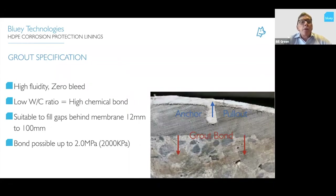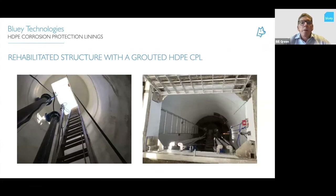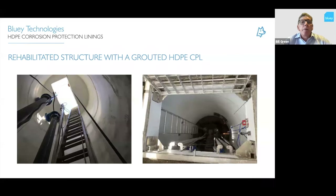Grout specifications require very high fluidity to penetrate a gap from 12mm down to 100mm behind the membrane. A low water-cement ratio gives high compressive strength and high chemical bond — up to 2 MPa (2,000 kPa). Photos here show a rehabilitated pump station using HDPE CPL, viewed from the bottom and from the top — quite a neat finish. That structure's lifetime with respect to corrosion has now been extended by 100 years.